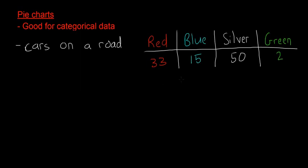So let's say that these are the numbers that we get after counting a number of cars gone by on the road. We have 33 red, 15 blue, 50 silver, and then 2 green cars. This is what we have to represent on a pie chart and this is the method we're going to do.